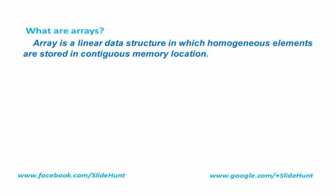First we know what arrays are. An array is a linear data structure in which homogeneous elements are stored in contiguous memory locations. Linear data structure means elements are stored in a sequence, or in other words, they form a linear list.